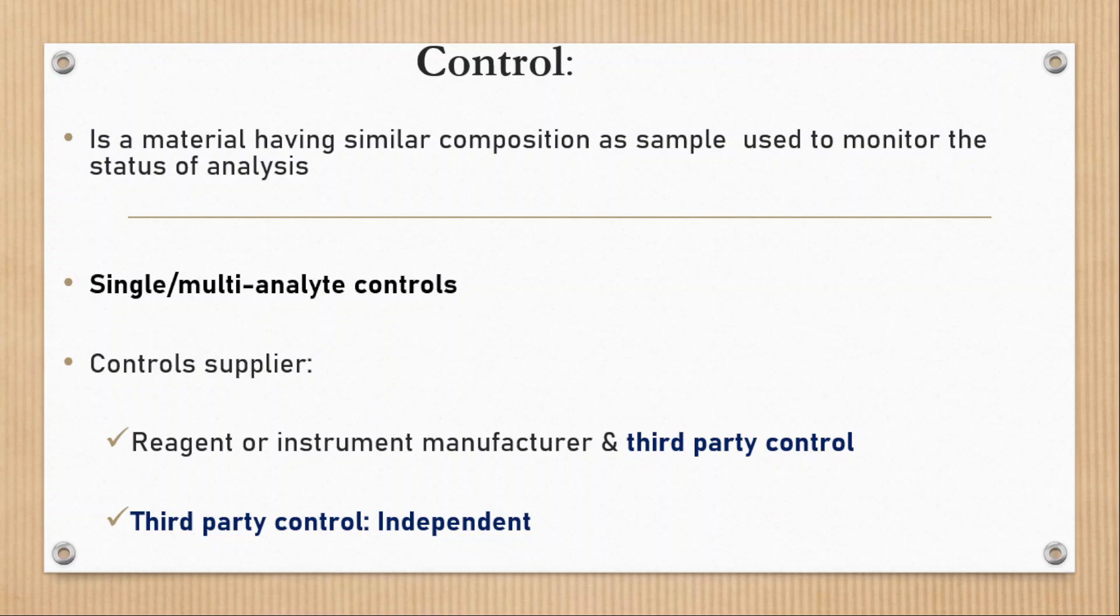What is third party control? Third party control is control from an independent body rather than reagent and instrument provider. It is designed to provide an unbiased and independent assessment of performance.